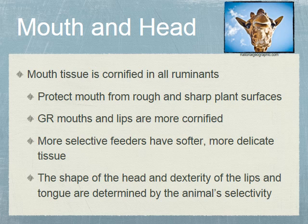I want to focus on the mouth and head. Mouth tissue is cornified in all ruminants — meaning it's layered, with an external layer that protects their mouth from rough and sharp plant surfaces. Grazers' mouths and lips are more cornified than intermediate types and concentrate selectors. The more selective feeders like concentrate selectors have softer, more delicate tissue. The shape of the head and dexterity of the lips and tongue are determined by the animal's selectivity — browsers tend to have a more nimble and flexible head and a long tongue to select the most immature plant material.